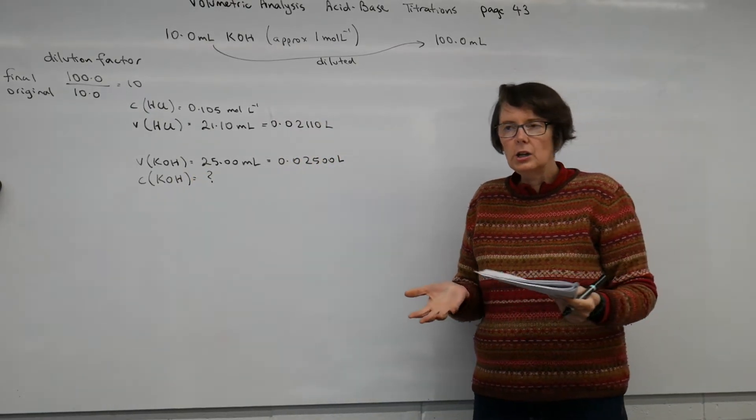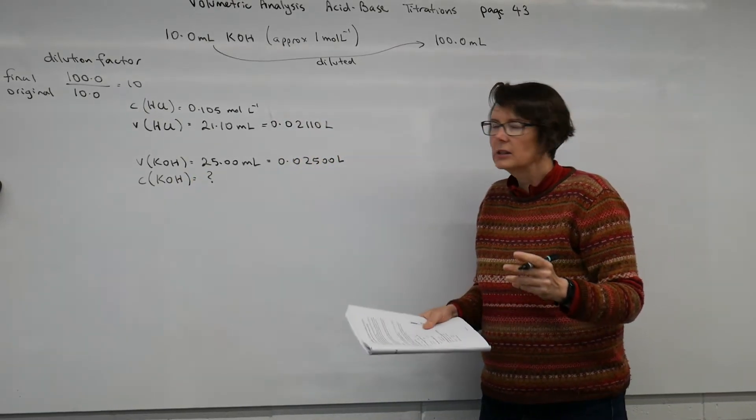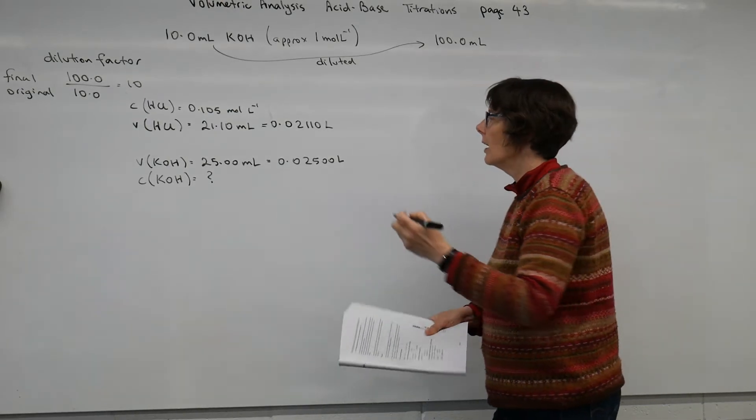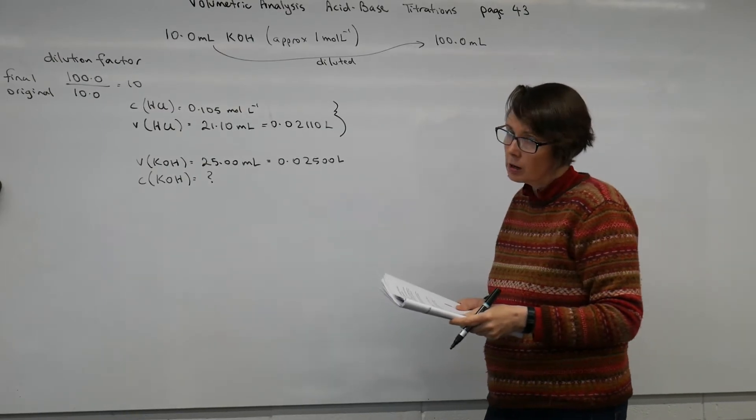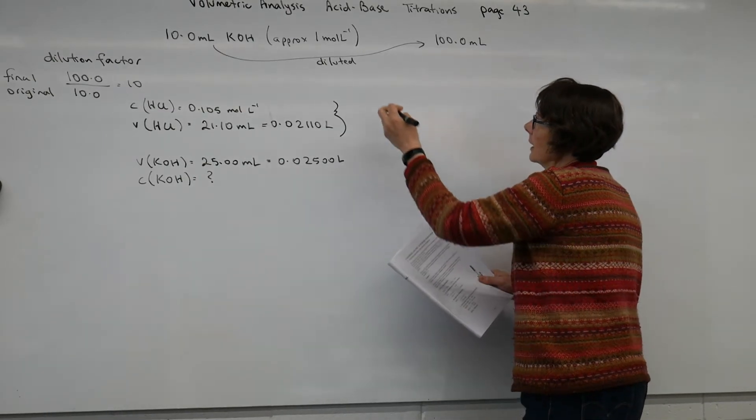Determine the concentration of the potassium hydroxide. When we're doing titration calculations, we must start with the thing that we have two pieces of information for. So we have to start by determining the moles of the hydrochloric acid.